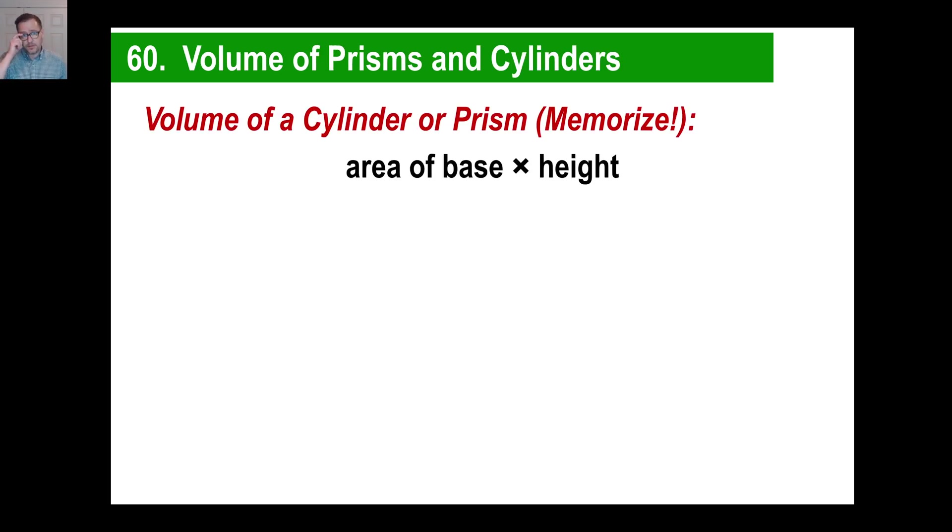Two things you need to memorize. Just memorize these or write them down. If you're still doing your notes, write it on the top of your notes somewhere and make sure you mark 60 with a big, at the top right of your notes. First off, look at that. Write that down. The volume of a cylinder or a prism is simply the area of the base times the height.